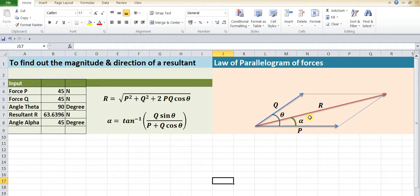We can find out the magnitude and direction of this particular resultant by using these formulas. R is given by square root of P squared plus Q squared plus 2PQ cos theta, and angle alpha is given by tan inverse of Q sin theta divided by P plus Q cos theta.